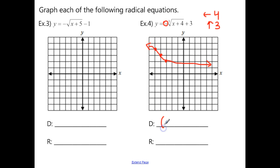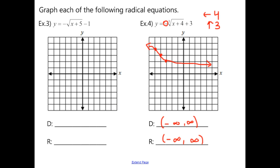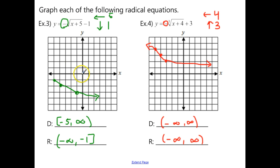Example 4 has domain negative infinity to positive infinity and range negative infinity to positive infinity. For Example 3 with the square root function: shift left 5, down 1, with a reflection. Move the origin to (−5, −1), then instead of going up 1 and up 2, you go down 1 and down 2 — it reflects downward. Domain is [−5, ∞) and range is (−∞, −1].